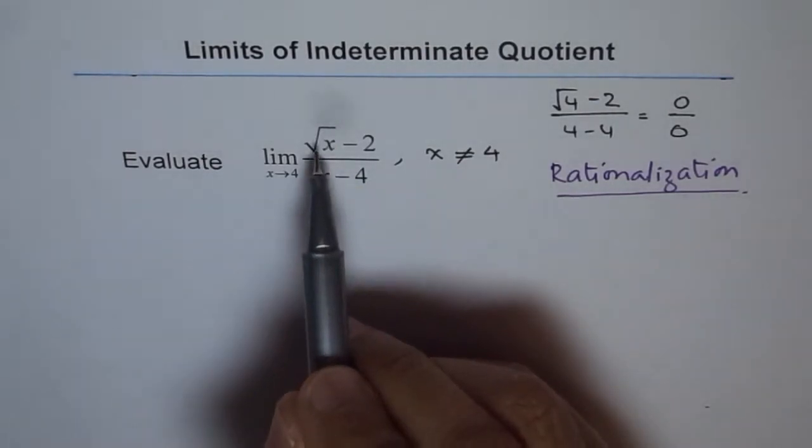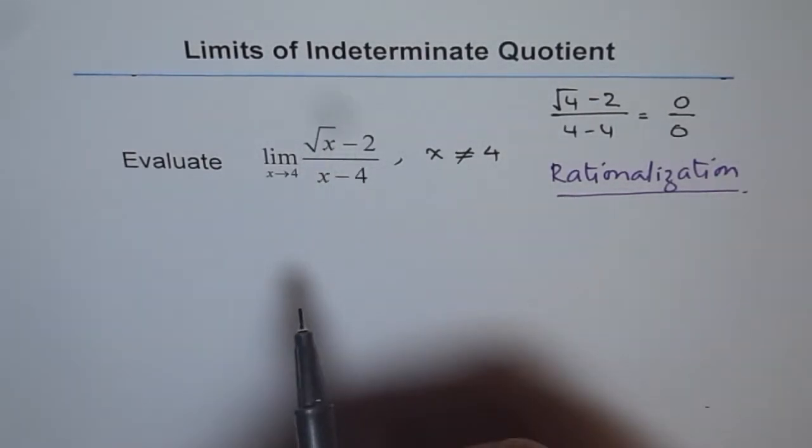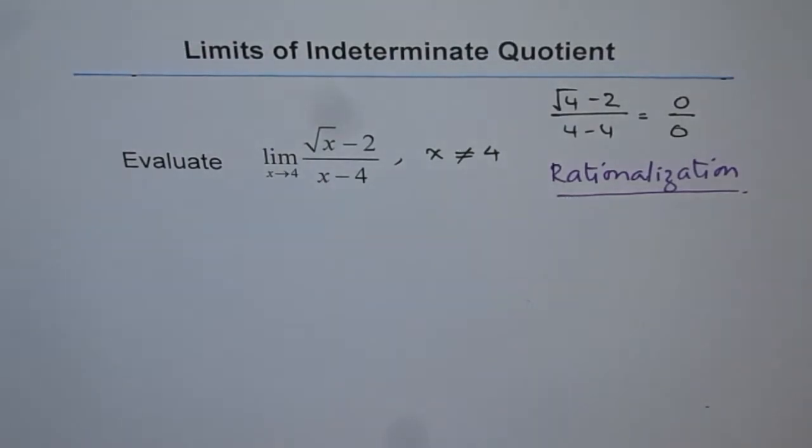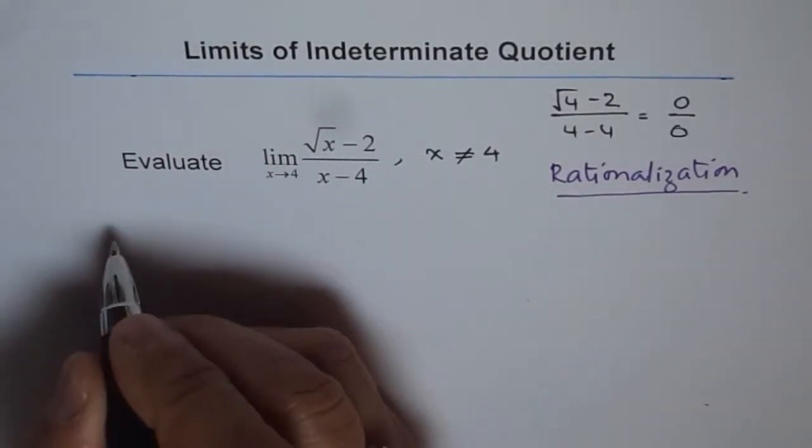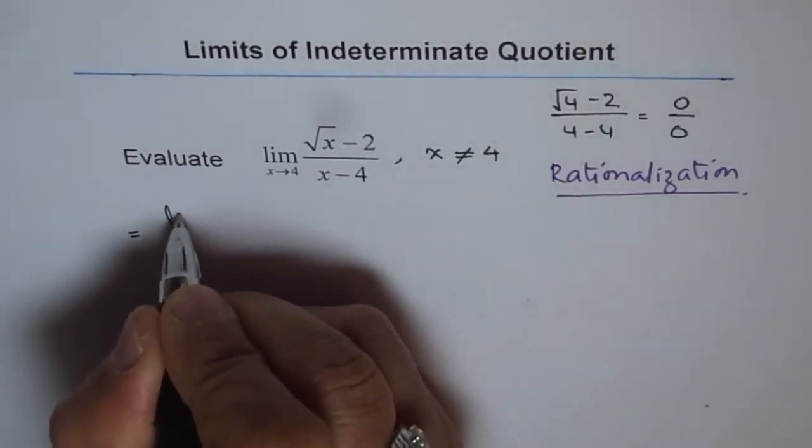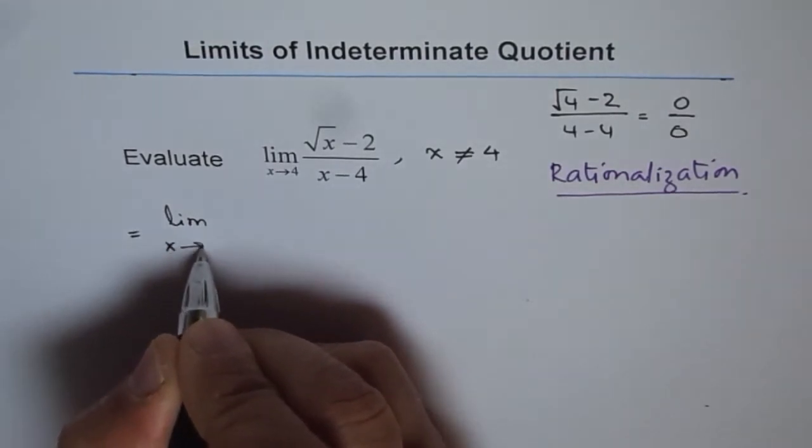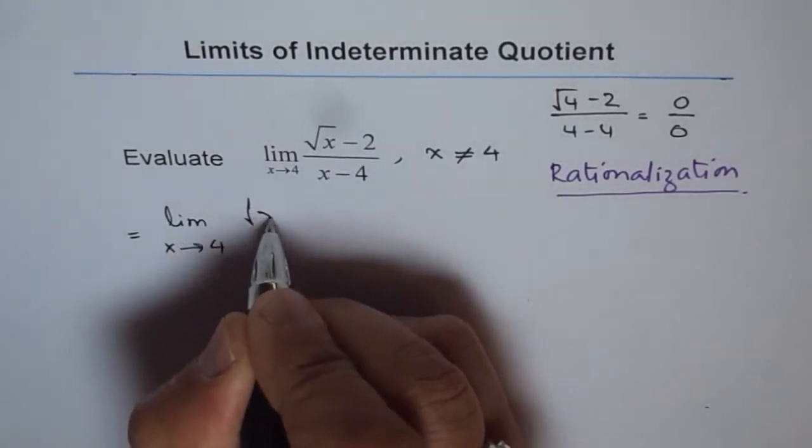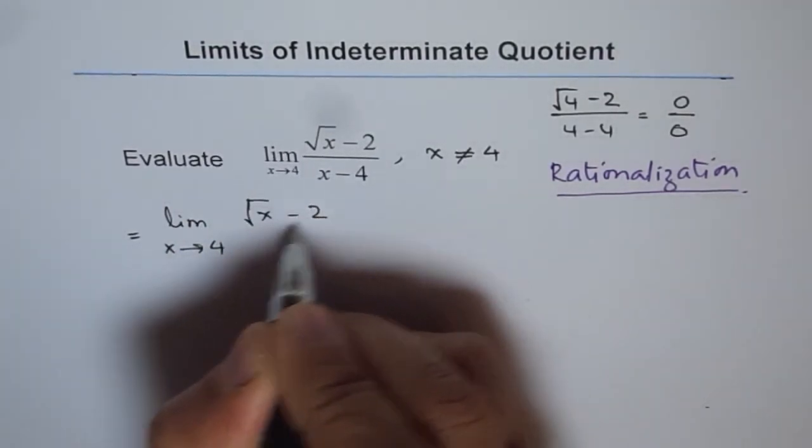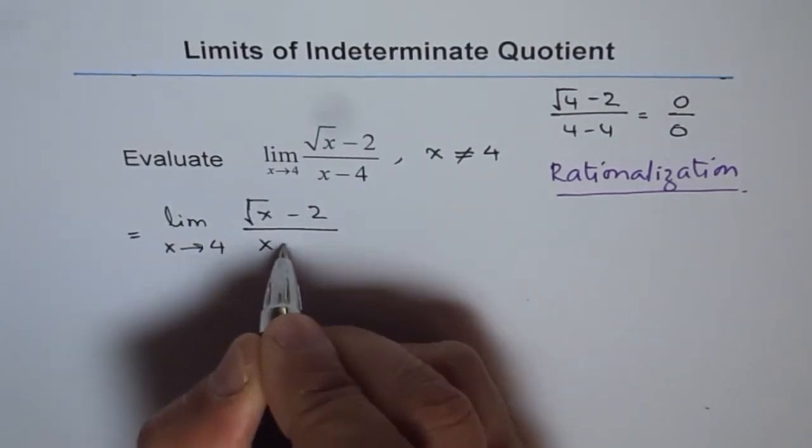Now, here, it is square root of x minus 2. The conjugate is square root of x plus 2. So, we will rationalize and simplify this expression. So, let's rewrite this.